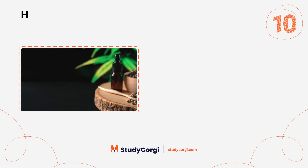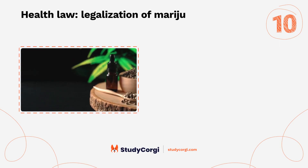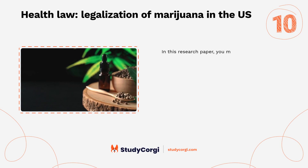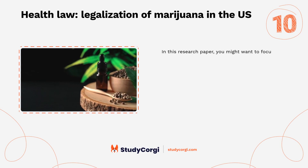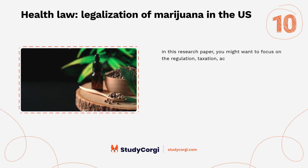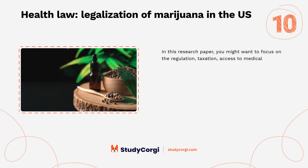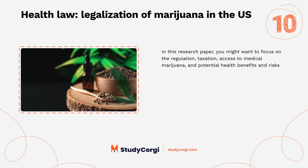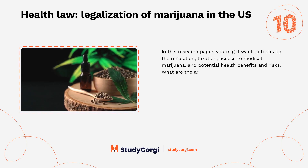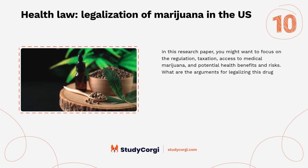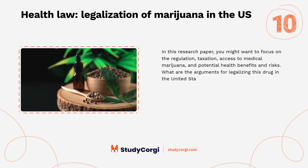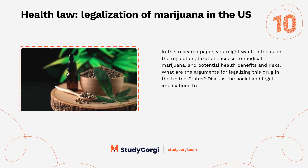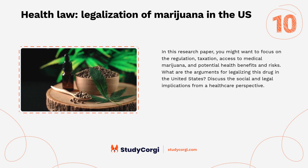Health law — legalization of marijuana in the U.S.: in this research paper, you might want to focus on the regulation, taxation, access to medical marijuana, and potential health benefits and risks. What are the arguments for legalizing this drug in the United States? Discuss the social and legal implications from a health care perspective.